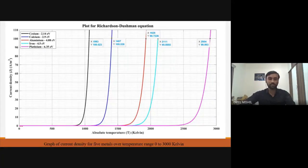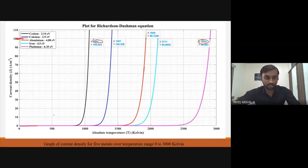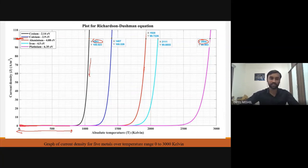This plot covers 0 K to 3000 K, and the graphs for all five metals are visible. For a constant value of current density, the required temperature is different for different materials — around 1000 K for cesium and around 3000 K for platinum. So it is very sensitive to the work function φ. Another thing you can notice: for an initial range of temperature, the change in current density with temperature is very low, almost constant. But for higher values of temperature, as temperature increases, the current density is very sensitive and increases very rapidly.